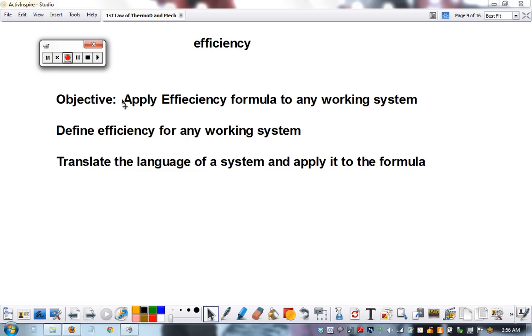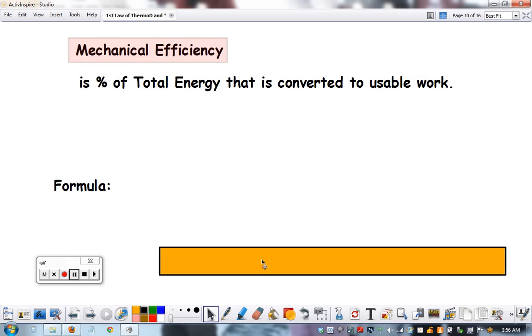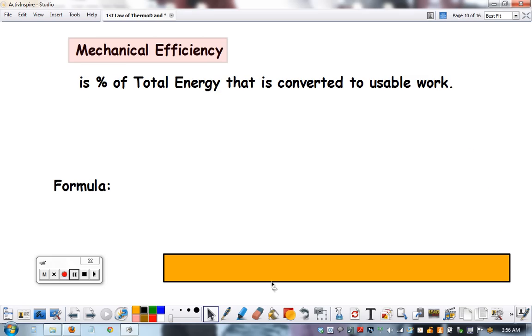Use the formula given some descriptions. First, the definition: mechanical efficiency is the percentage of total energy that is actually converted into usable work. This is done by a machine or a process.